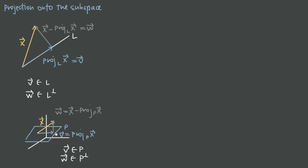In both of these cases, the projection vectors v are the closest vector to the original vector x that lie in the subspace. So if you want to find the vector in L that is as close as possible to x, that's going to be the projection vector. And the same thing applies for the plane — v is the closest vector in P to x. We can project onto a line, onto a plane, or onto any other subspace of any dimension.